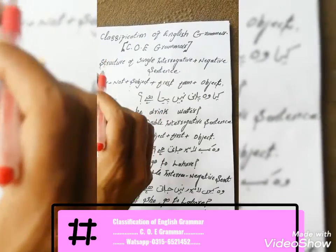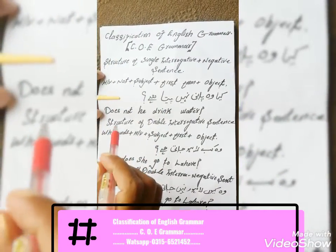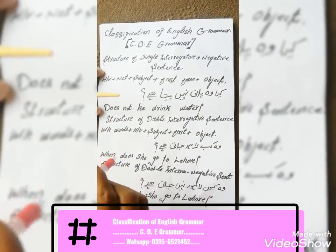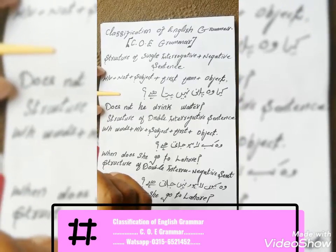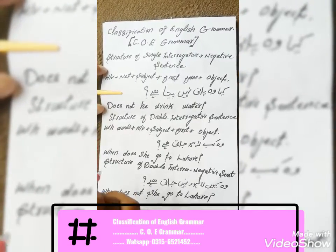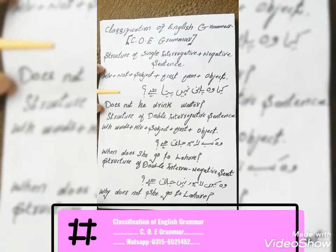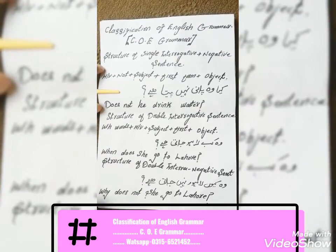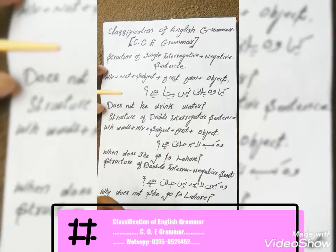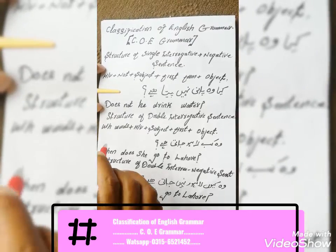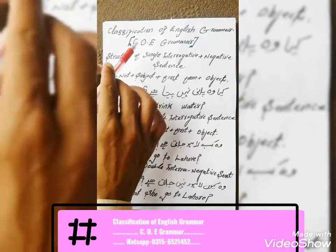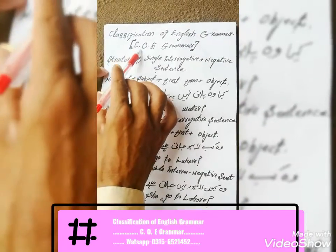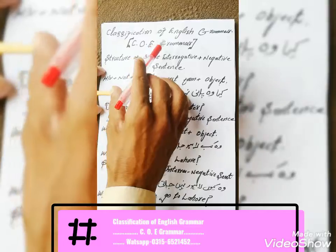We start with the name of Allah, who is the king of kings and the master of masters, who is the most beneficial and the most merciful. Welcome back to the classification of English grammar, COE grammar.